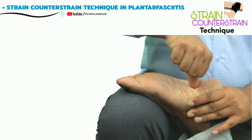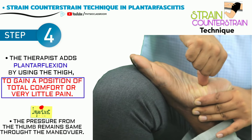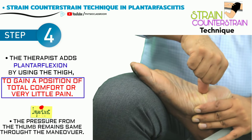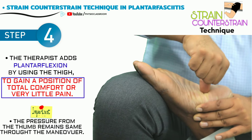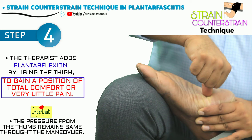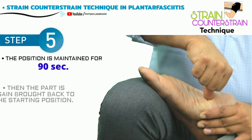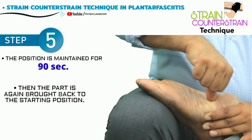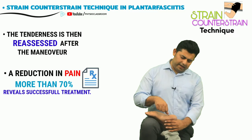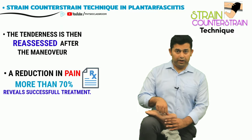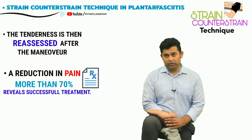While maintaining pressure over the tender point, the therapist next adds further plantar flexion using the thigh. A position of maximum comfort or ease is found in which the tenderness is completely eliminated or reduced by at least 70 percent. This position is then maintained for 90 seconds, after which the part is repositioned by the therapist back to the neutral position.